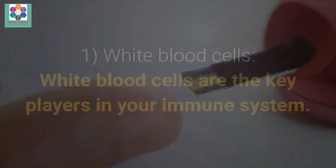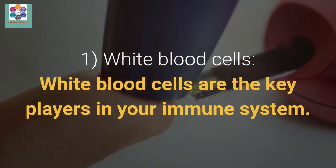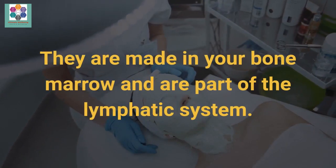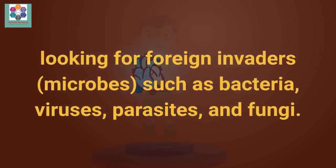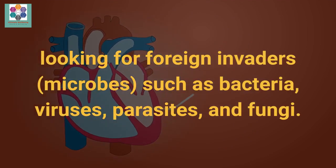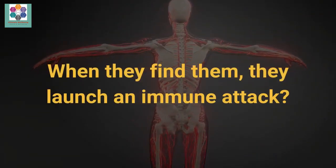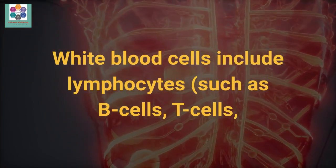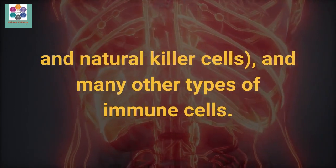Now, let us describe each part of the immune system. 1. White blood cells. White blood cells are the key players in your immune system. They are made in your bone marrow and are part of the lymphatic system. White blood cells move through blood and tissue throughout your body, looking for foreign invaders — microbes such as bacteria, viruses, parasites, and fungi. When they find them, they launch an immune attack. White blood cells include lymphocytes, such as B cells, T cells, and natural killer cells, and many other types of immune cells.